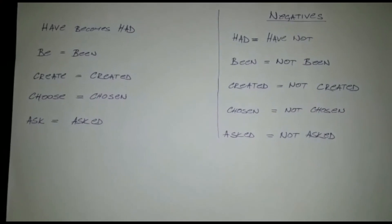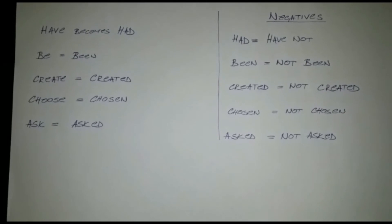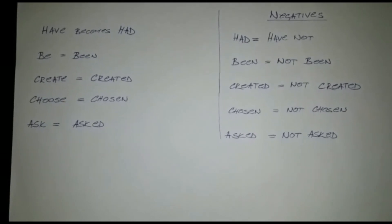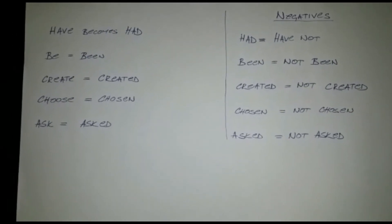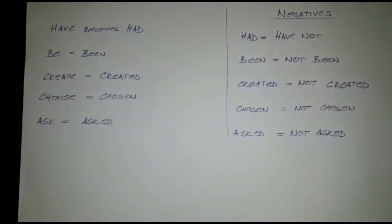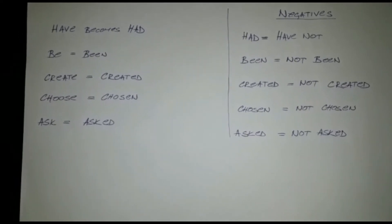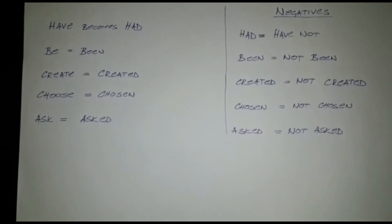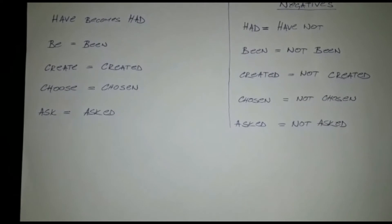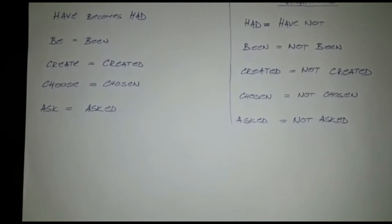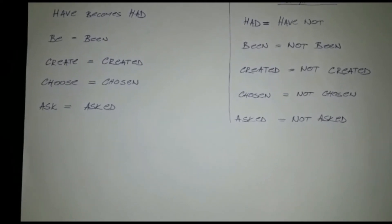Now let's see how verbs become irregular. Have becomes had. Be becomes been. Create becomes created. Choose becomes chosen. Ask becomes asked.